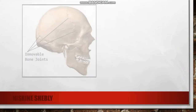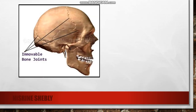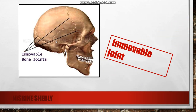The bones of the skull are immovable bone joints — they cannot move, so they are immovable joints.